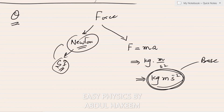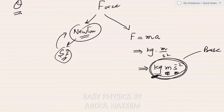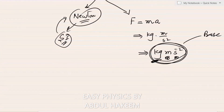So the SI unit is Newton — the unit in which it is measured — and the base unit is kg·m·s⁻², which informs about its ingredients: it is derived from mass and acceleration.